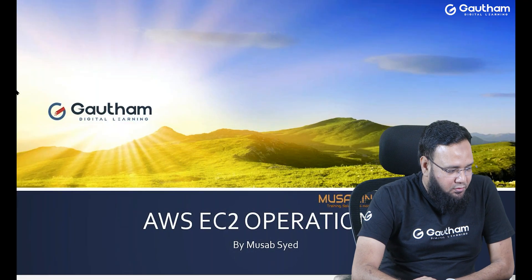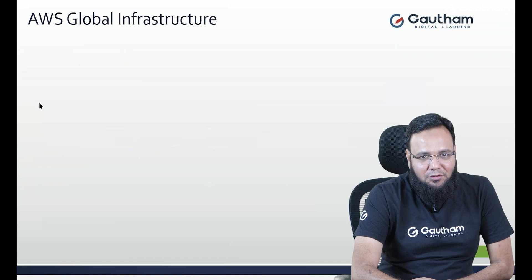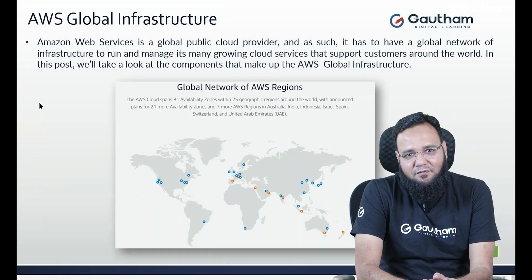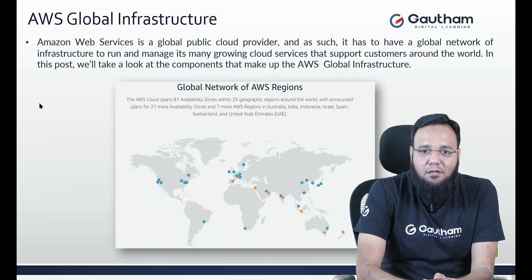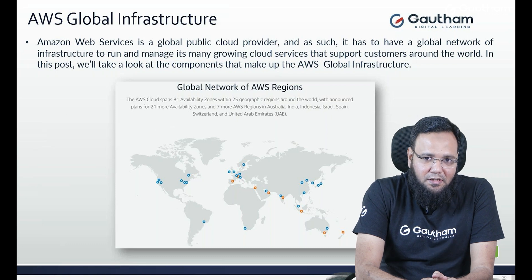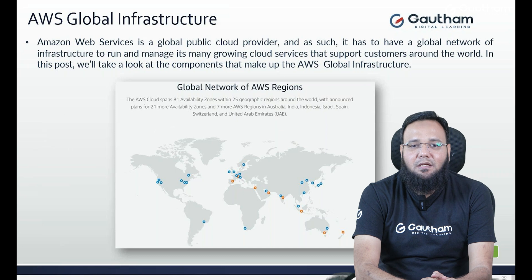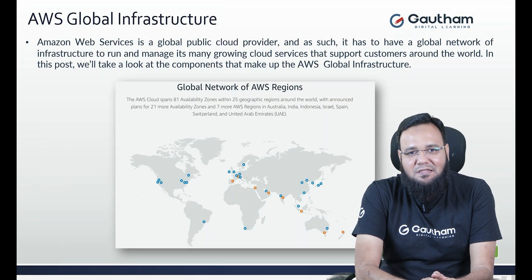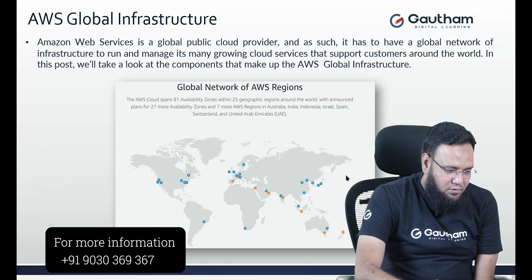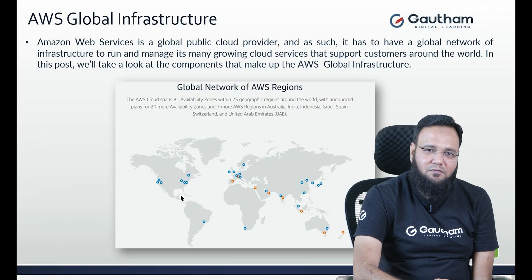AWS is a cloud provider that provides services on the internet or over the network — that is called cloud services. AWS also has a big, humongous, massive infrastructure which we call AWS's global infrastructure. In almost a huge number of countries, they have made their data centers. They have selected some developed or developing countries, chosen certain cities, and established their data centers there. As you can see in this picture, there are a huge number of locations where they are present, and they are consecutively making new data centers day to day.